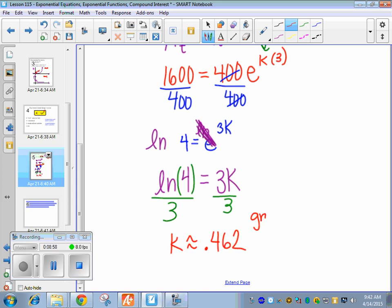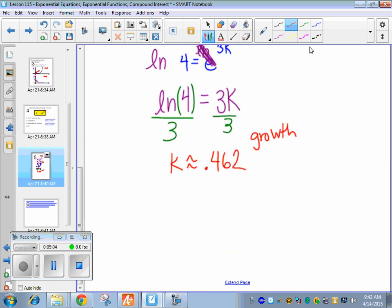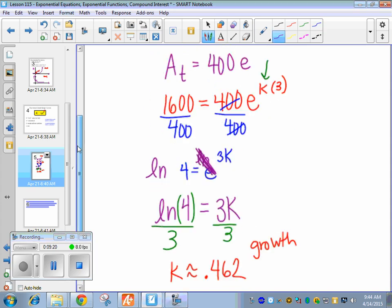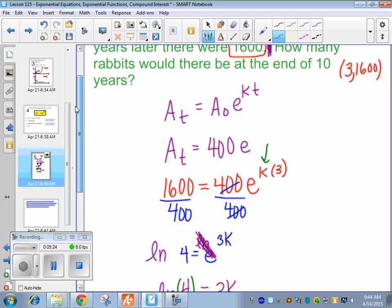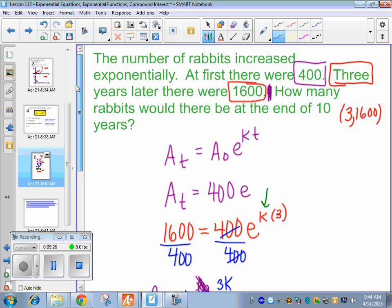You can plug this whole thing into your calculator. Just make sure you close parentheses, so you're only doing the ln of 4. And then you divide by 3. And we're going to round, we're going to write our answer down, round it to 3 decimal places. So since this is a positive number, we have exponential growth, which makes sense for rabbits. Now, I want you guys to store this value in your calculator. Let's go back to the problem. We stored this in our calculator, so we're going to get a more exact answer.